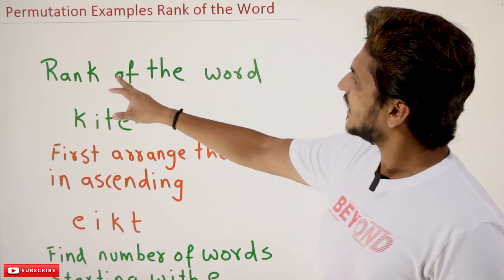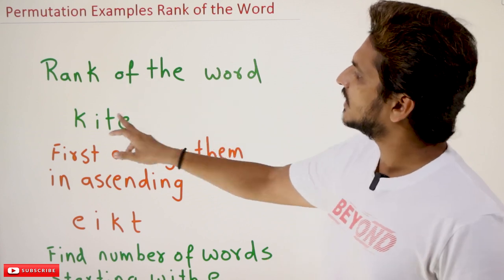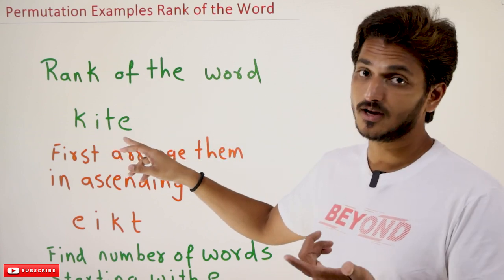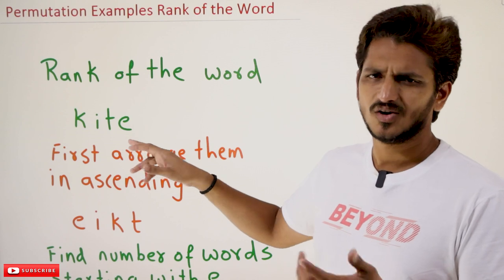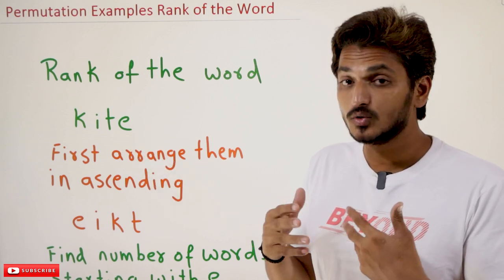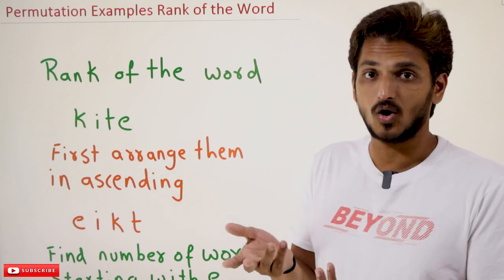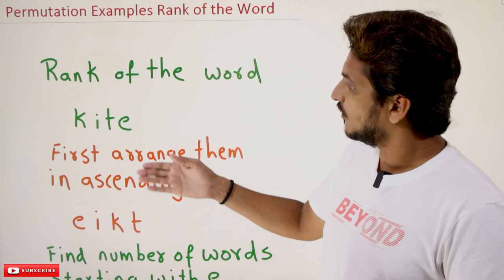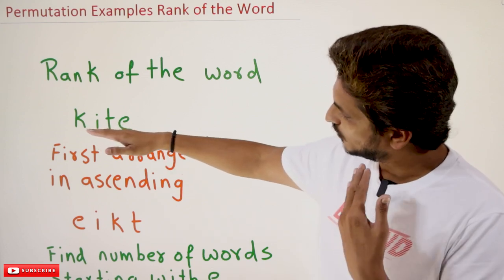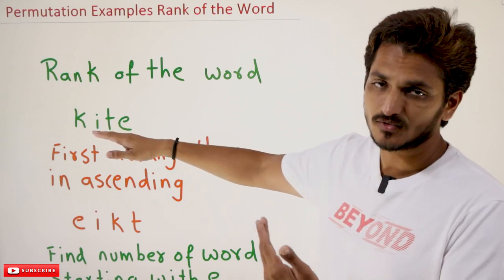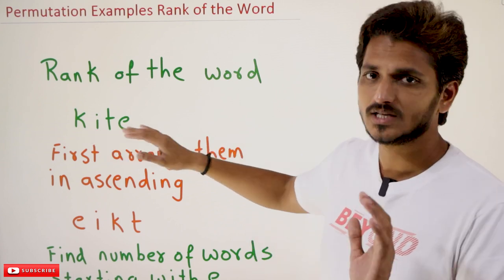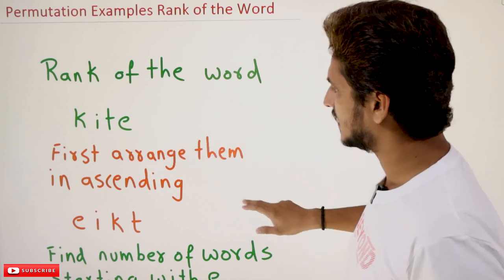We need to find the rank of the word KITE. What does rank of the word mean? According to the dictionary order, we need to find the position of the word. With an example you will get clarity.